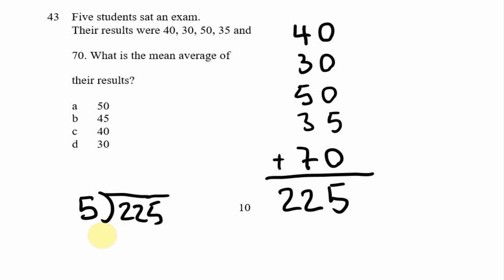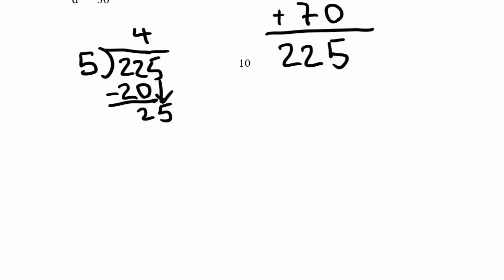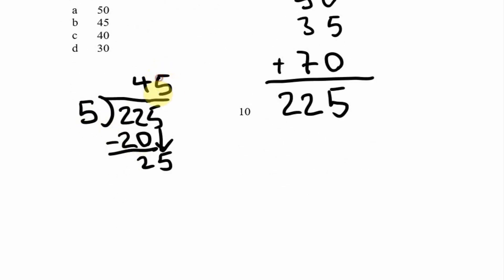We take the long division route because City Angles doesn't allow the use of a calculator. 5 into 22 goes 4 times; 4 times 5 is 20; 22 minus 20 leaves 2; carry down the 5 to get 25. 5 into 25 goes 5 times; 5 times 5 is 25; 25 minus 25 is 0. So our answer is 45 — the mean average is 45.